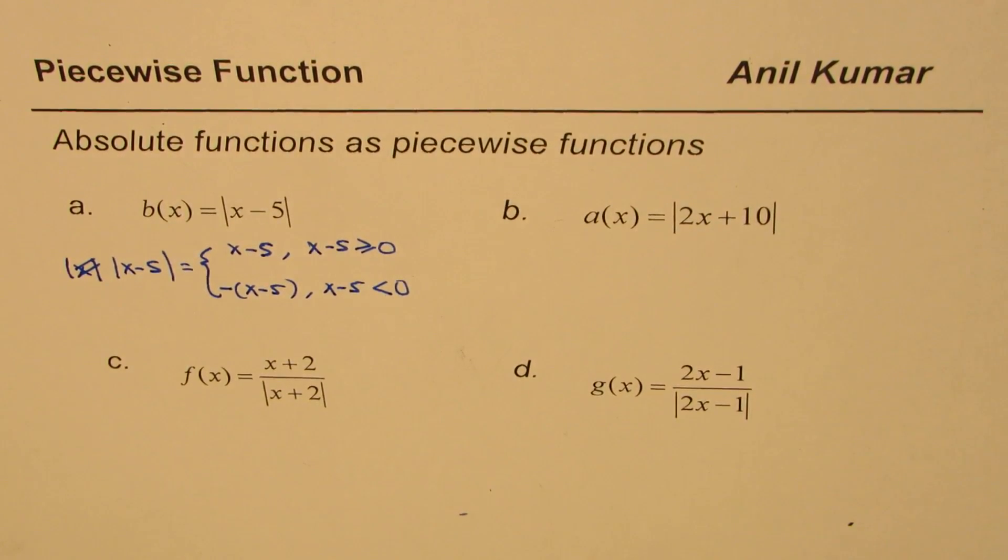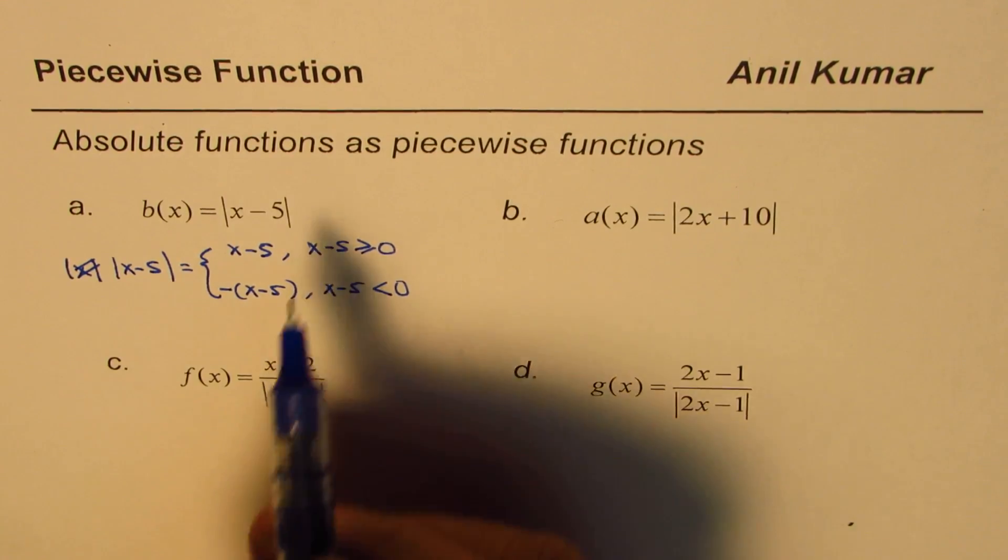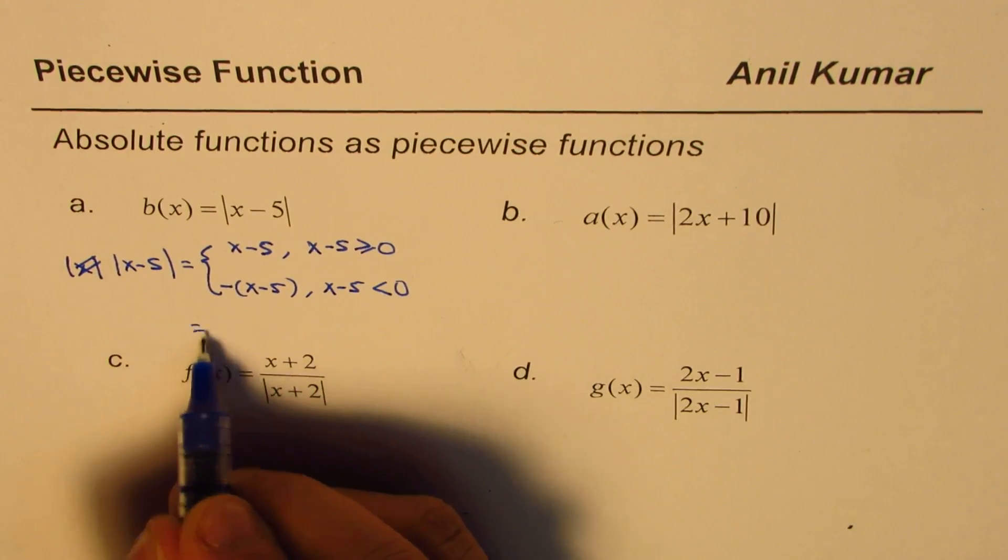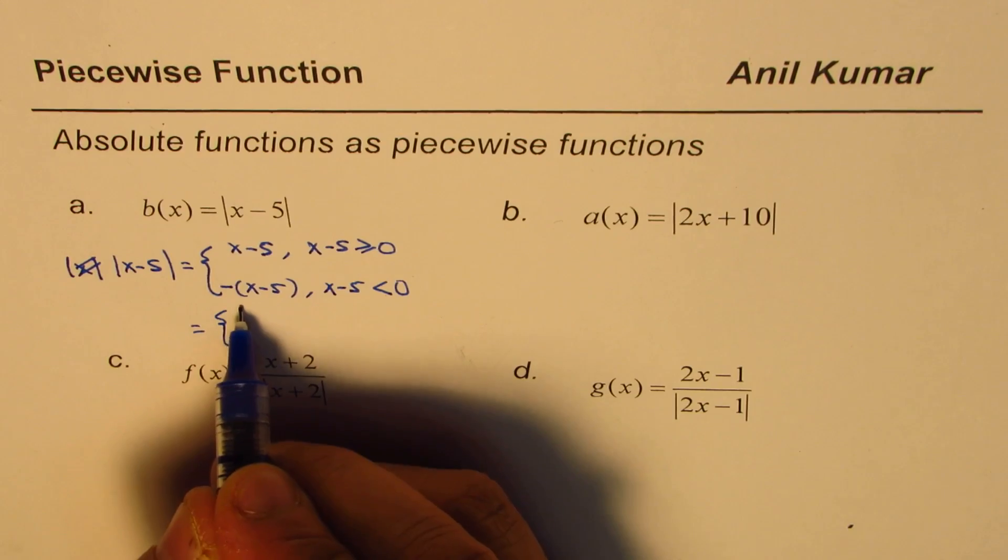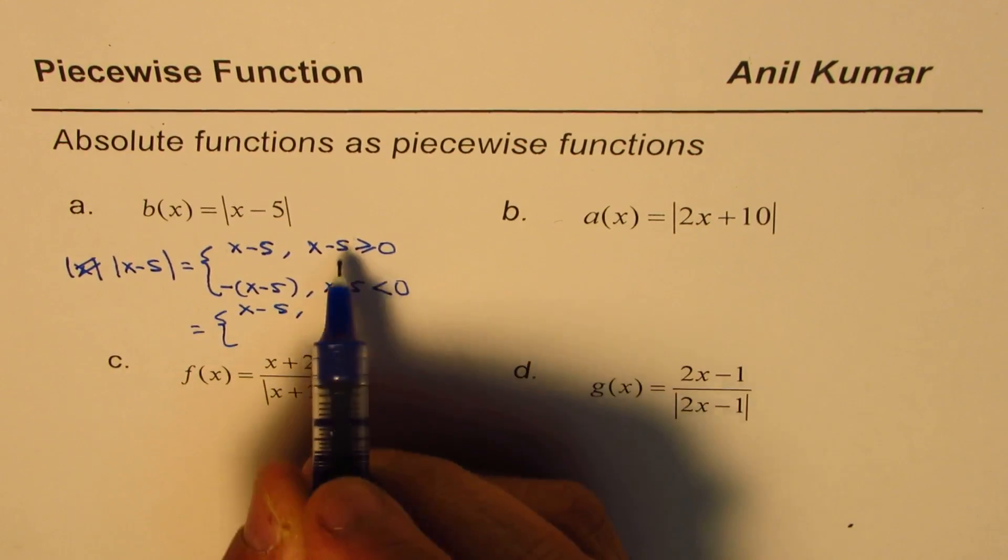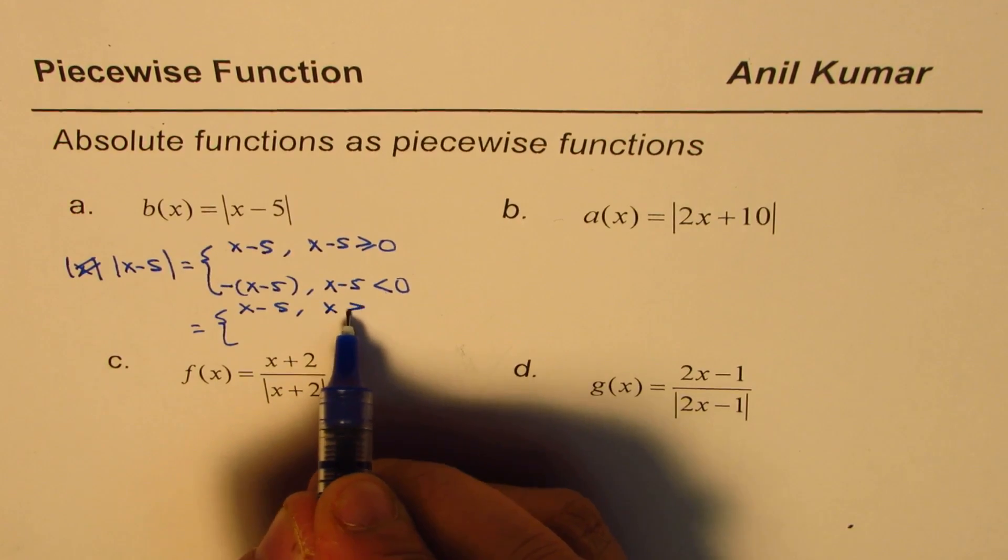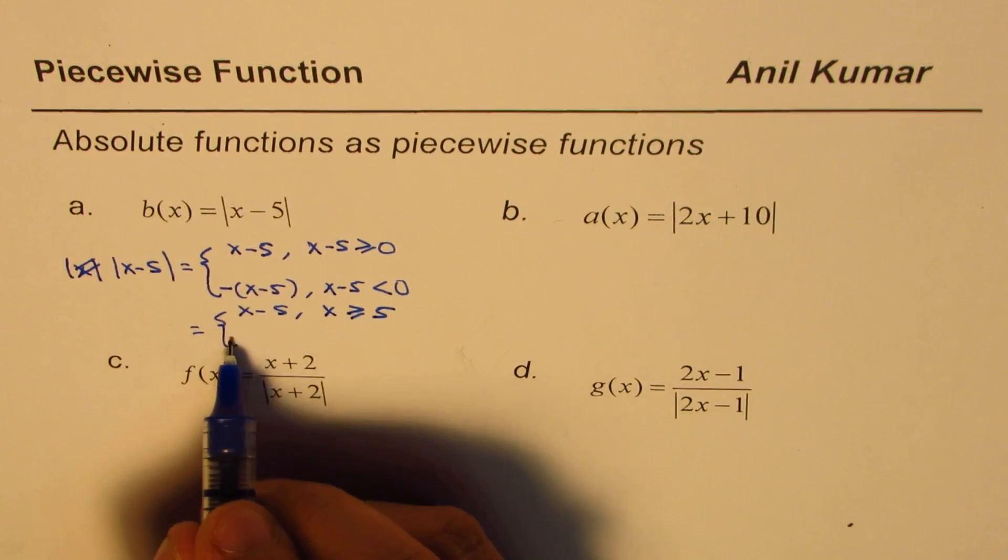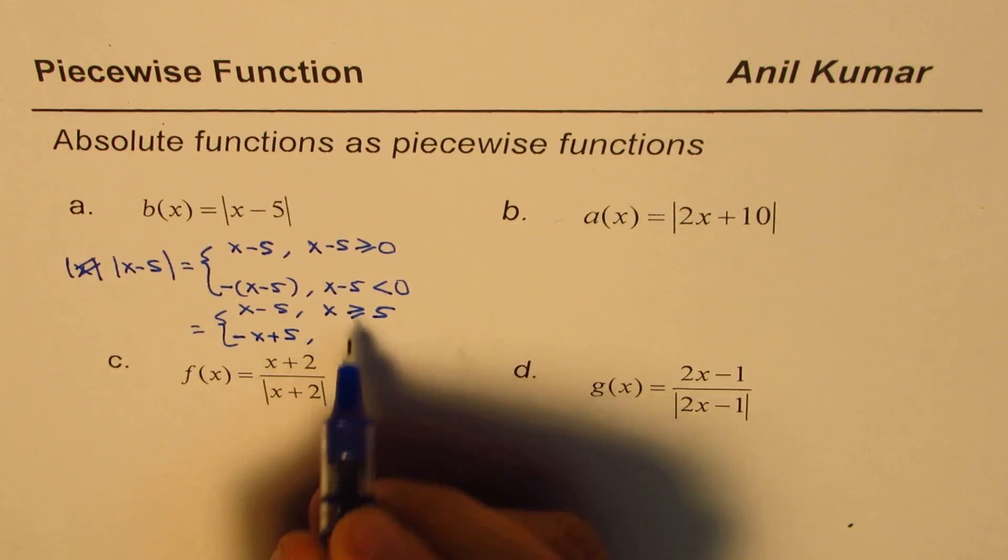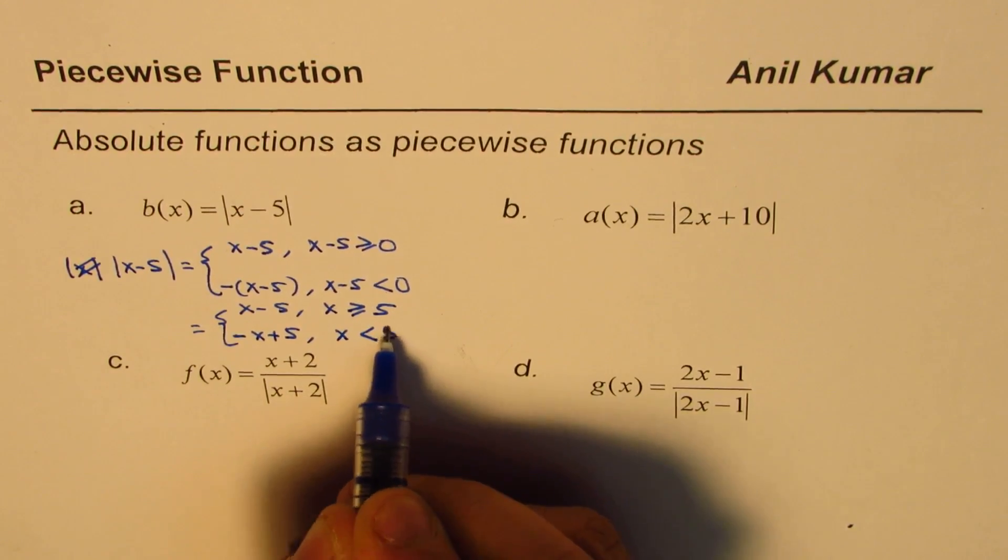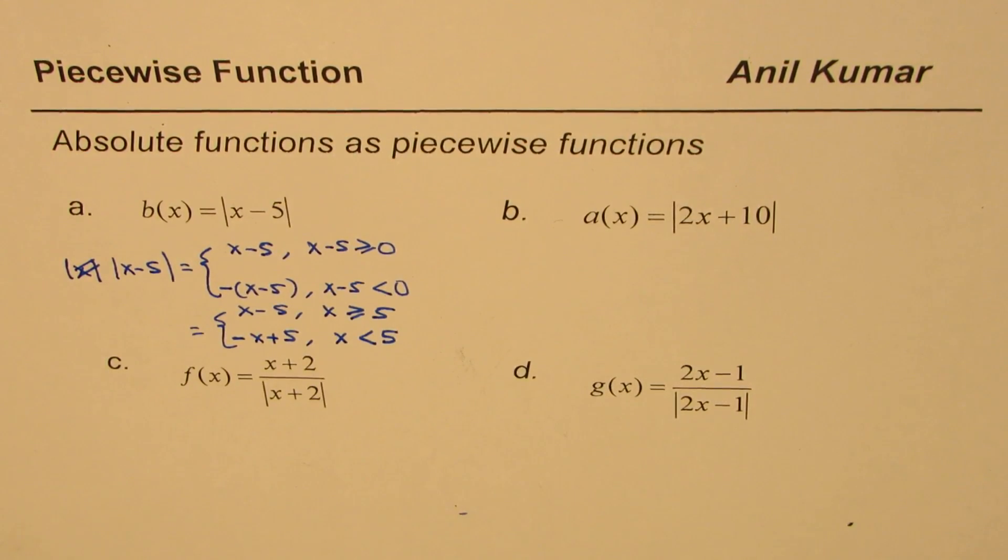To be more precise we could also write this as equals to x minus 5 if x is greater than equals to 5, or minus x plus 5 for x less than 5. So that is how you are going to define this absolute function.